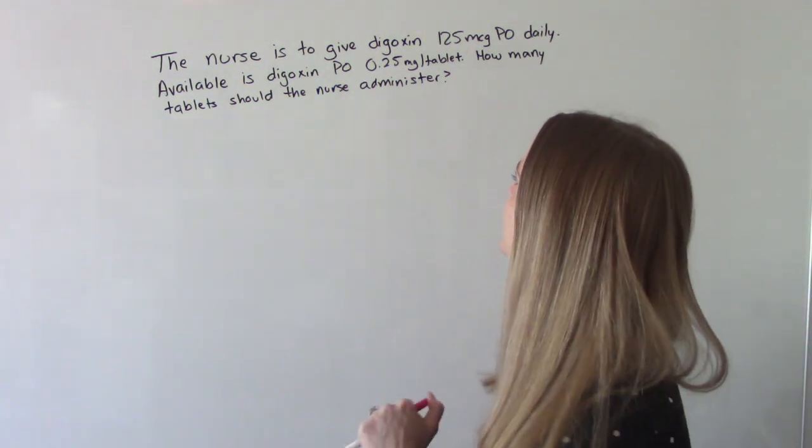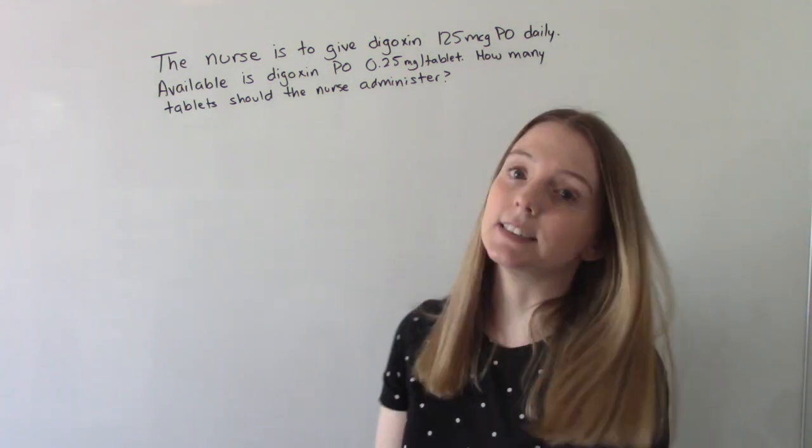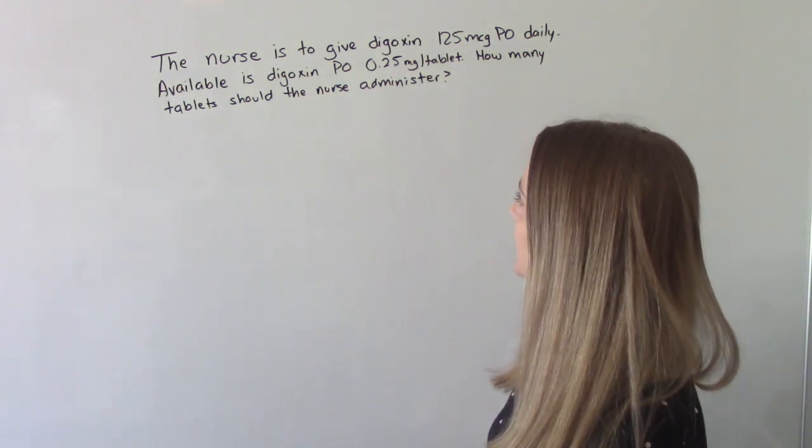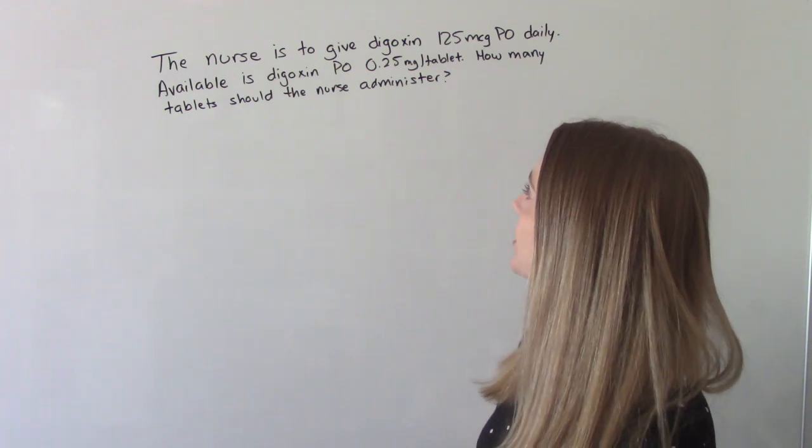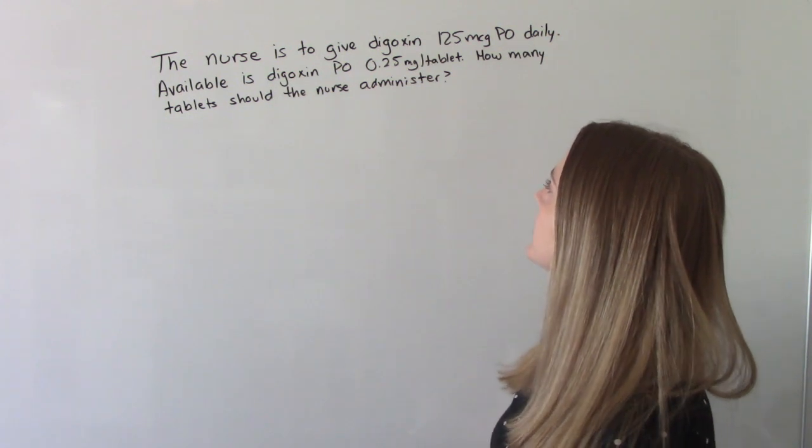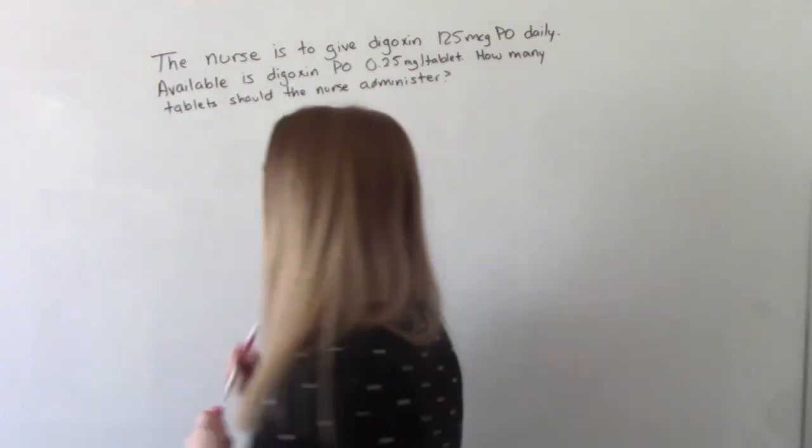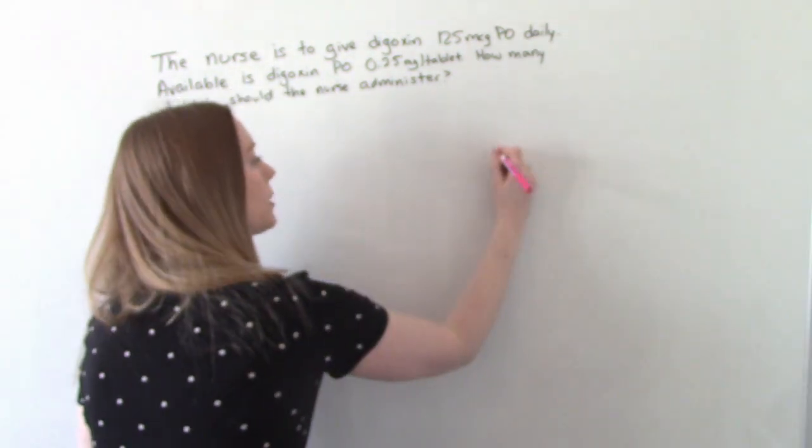The nurse is going to give Digoxin 125 micrograms PO daily. Available is Digoxin PO 0.25 milligram tablets. So how many tablets should the nurse administer? So the first thing, we're looking for tablets, right? So that's going to be our answer.